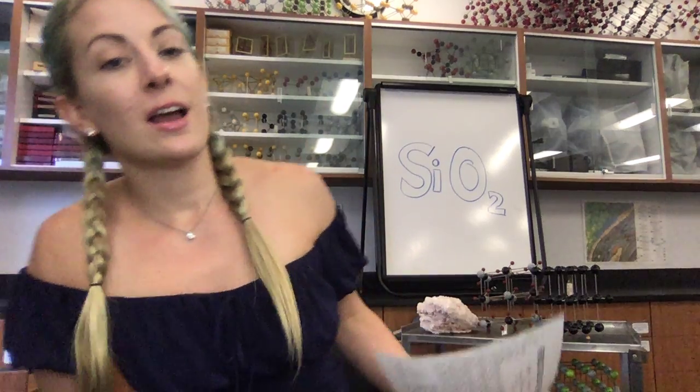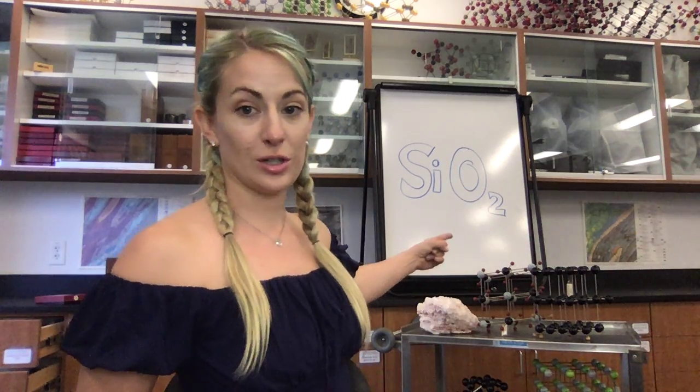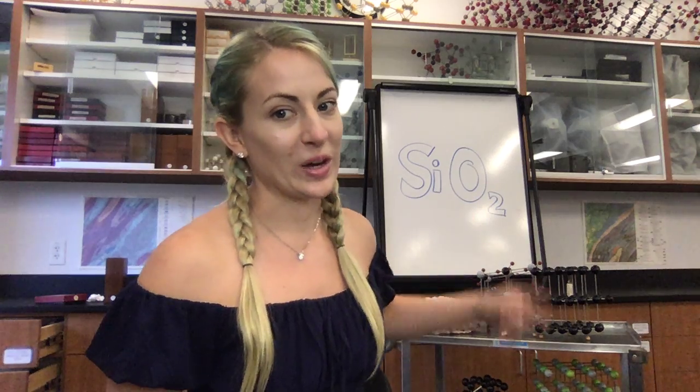Now that you know the properties and ID tools for identifying minerals, I'm going to start going into our different mineral groups. The first mineral group is really big — it is the most abundant mineral type. So we get one video for the first group, silicates, and another video for all the other minerals because this one is the main one.